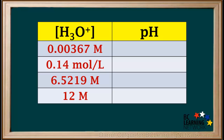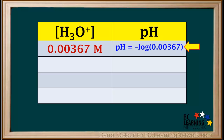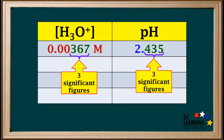This is the time to get all the little details straight in your mind. You'll be doing many calculations involving pH and hydronium ion concentrations in the rest of this course. The given hydronium ion concentration has three significant figures, so the pH must be expressed to three decimal places. The pH is equal to the negative log of 0.00367, which comes out to 2.435, expressed to three decimal places. The three decimal places provide the three significant figures corresponding to those in 0.00367 molar.